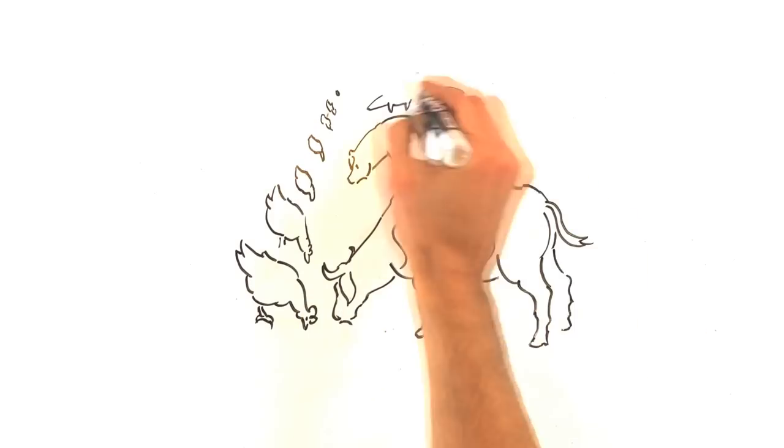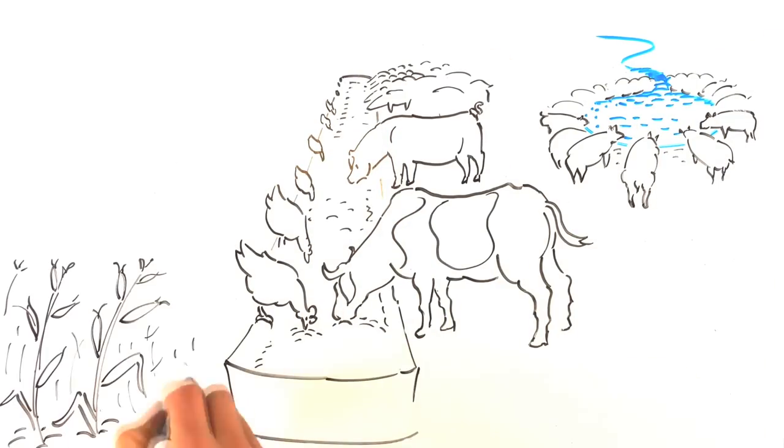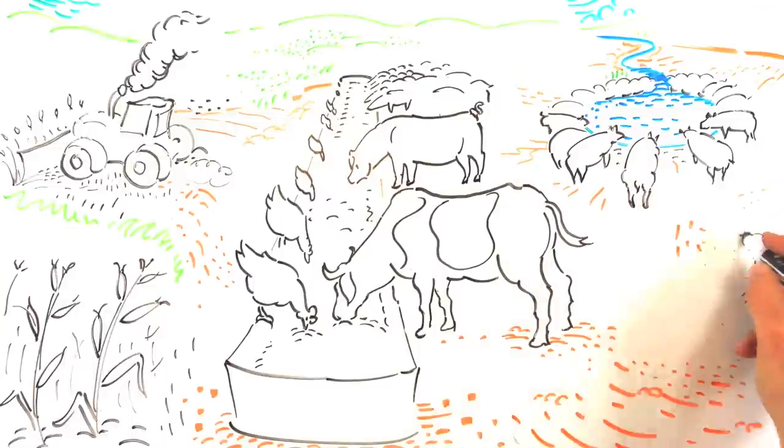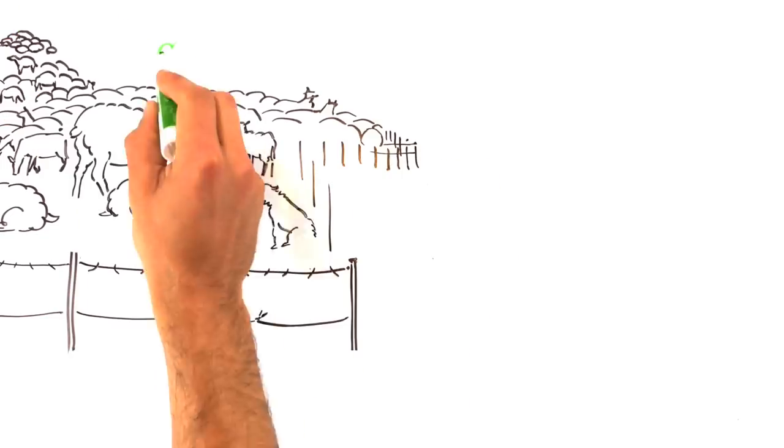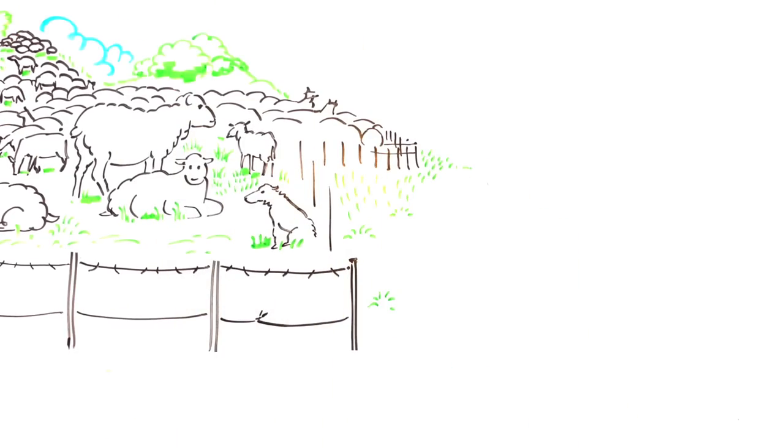40% of farming is dedicated to feeding the animals that feed us. A recent Oxford study found that eating only cultured meat could reduce the impact on our environment by a whopping 90%. Of course, there are easier steps we should be taking already.